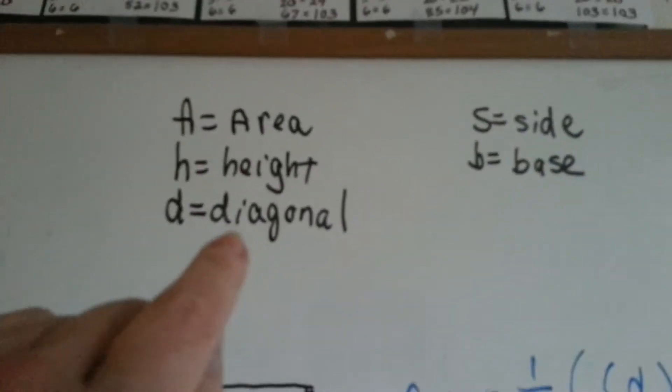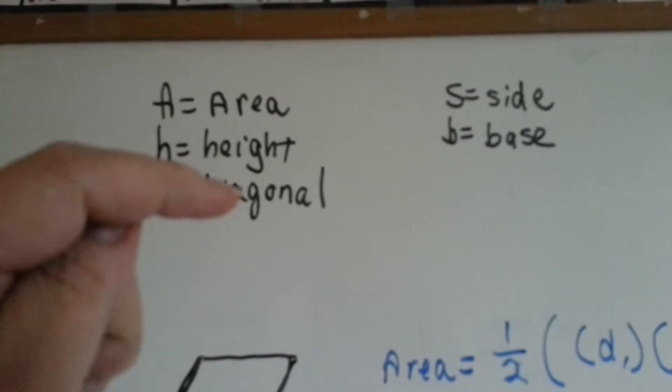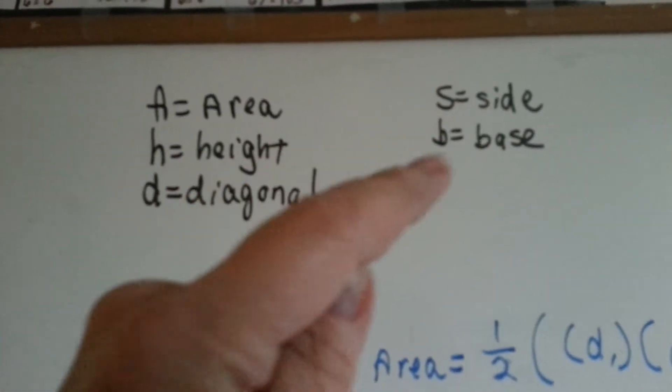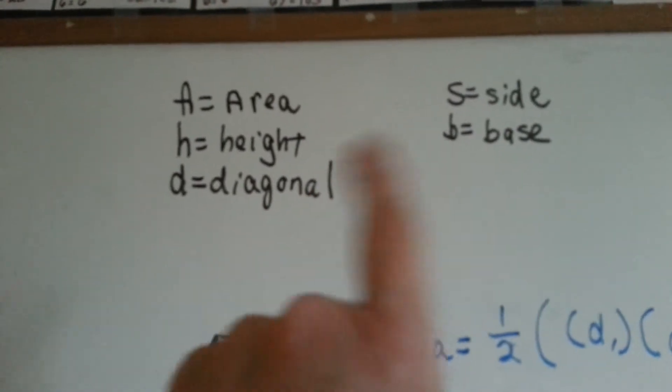First thing we want to make sure you know is that when you see A, it means area, H is height, D is diagonal, S is side, and B is base. When you see these in a formula, that's what they mean.